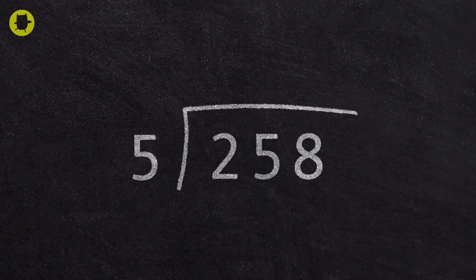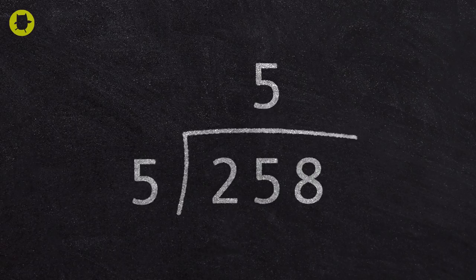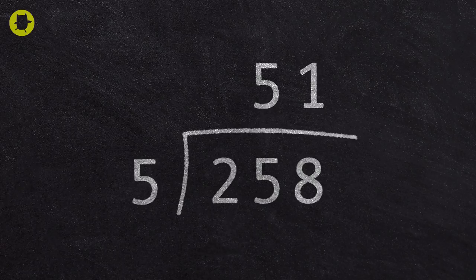First we ask how many groups of 5 are there in 2? We then say how many groups of 5 in 25? The answer is 5, so we write 5 above the 5. Then we ask how many groups of 5 are there in 8? The answer is 1, we write the 1 above the 8.